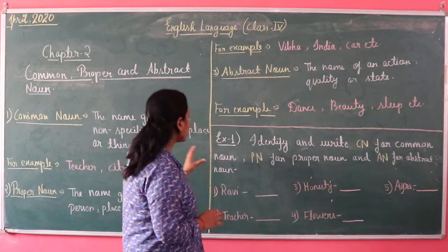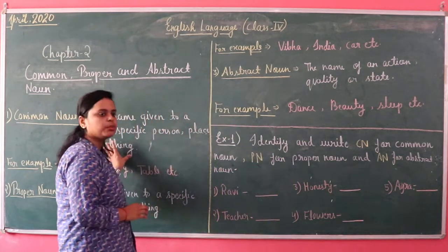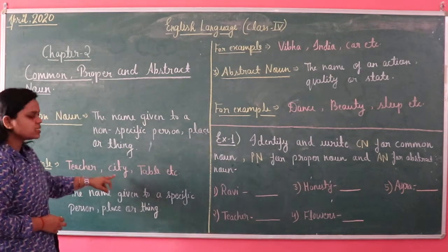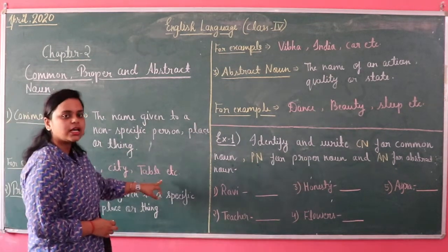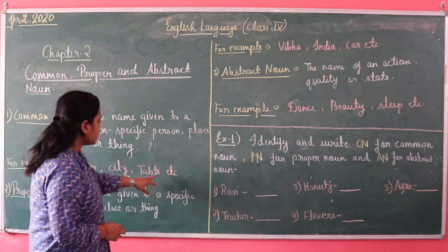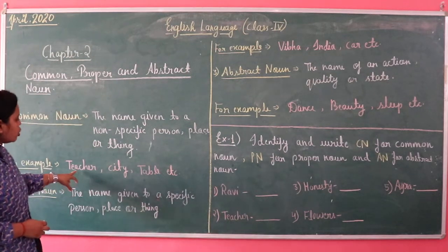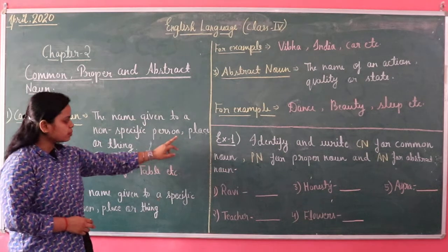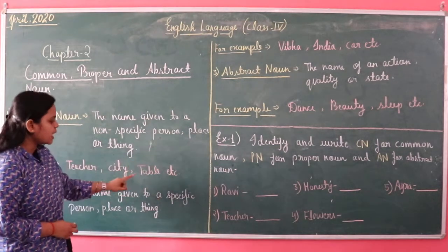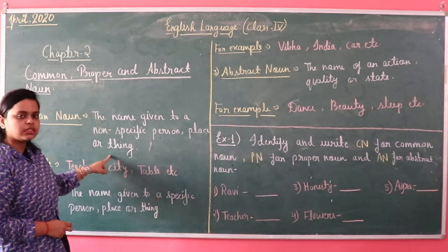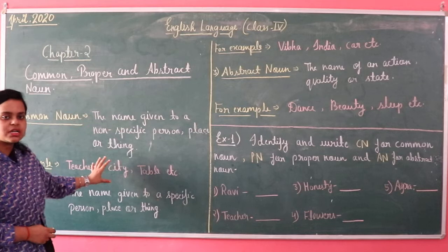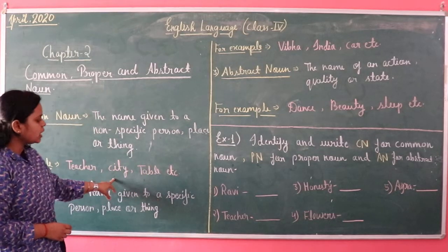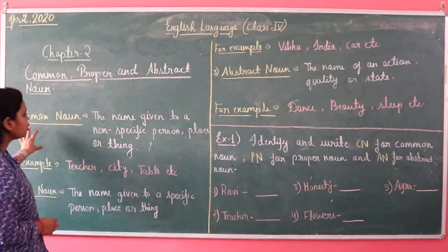For example: teacher, city, table, etc. Teacher is a non-specific person, city is a non-specific place, and table is a non-specific thing. In this case, we have no specific name given to a teacher, city, or table. That is why it is a common noun.